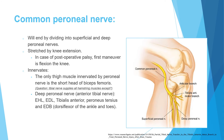The common peroneal nerve gives only one muscle in the thigh — the short head of the biceps femoris. So the tibial nerve gives all the hamstring muscles except the short head of the biceps femoris, which is supplied by the common peroneal nerve. The common peroneal nerve runs along the posterior fibula, becoming stretched with knee extension and relaxed with knee flexion.